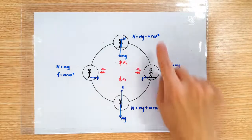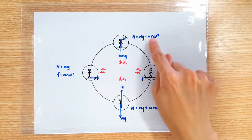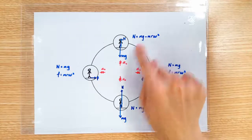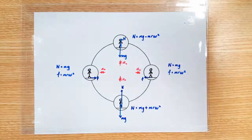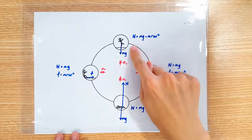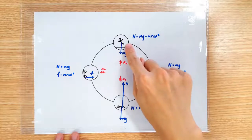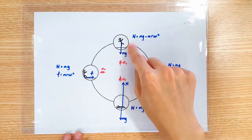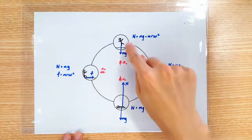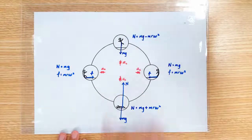Let's talk about the case when ω is so large that mRω² is exactly equal to mg. At the top position, the normal contact force will have dropped to zero, which means this man is going to experience weightlessness when he's at the top position — he'll be kind of hovering in the capsule.